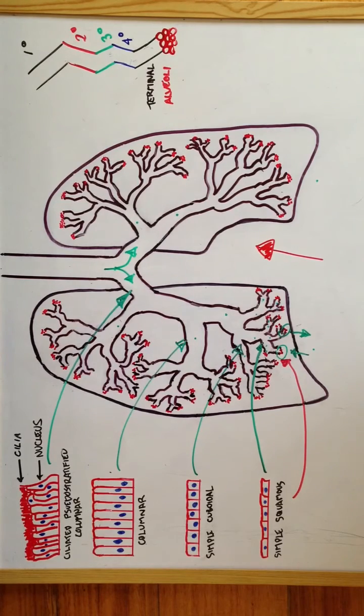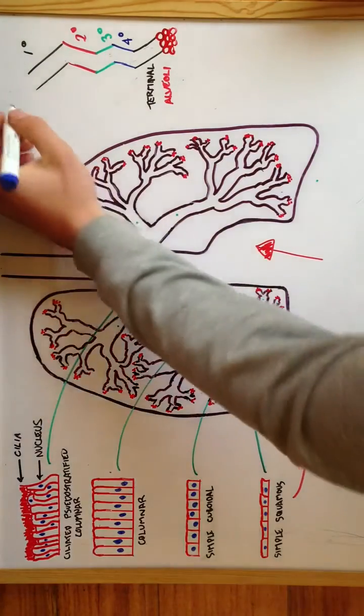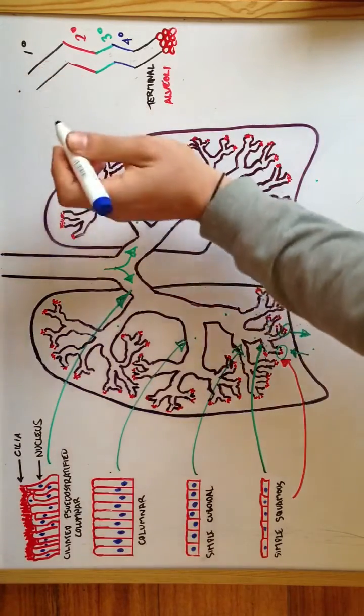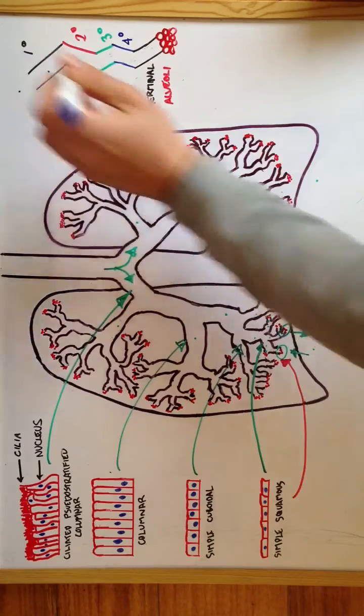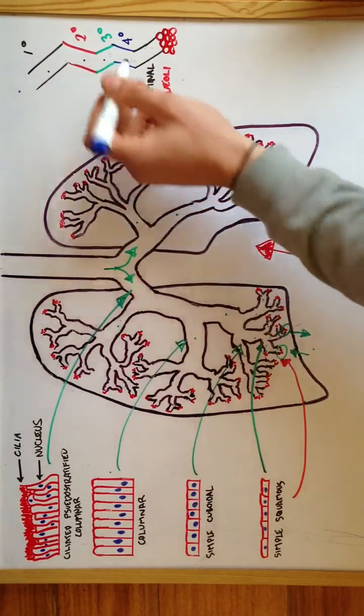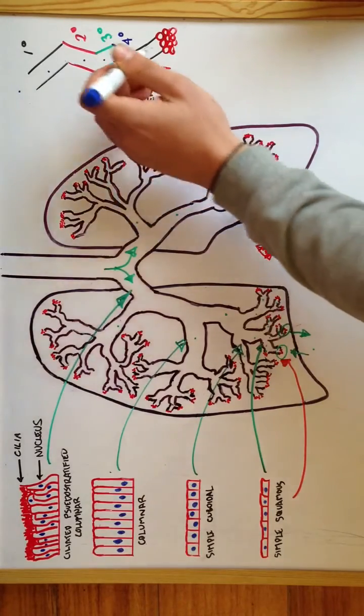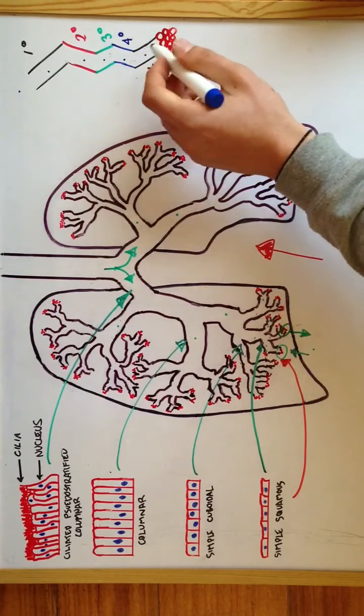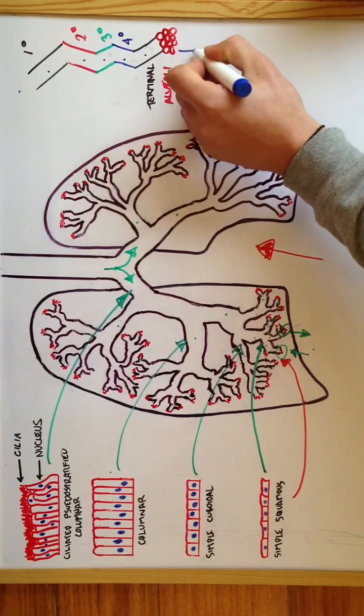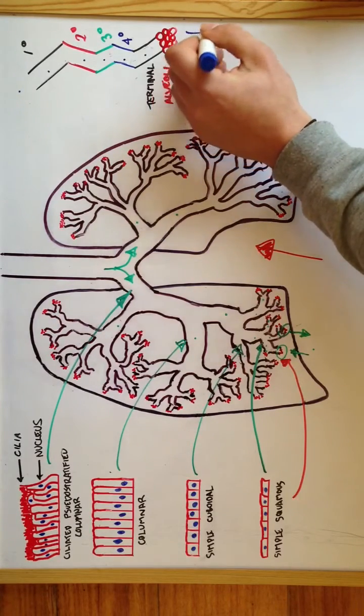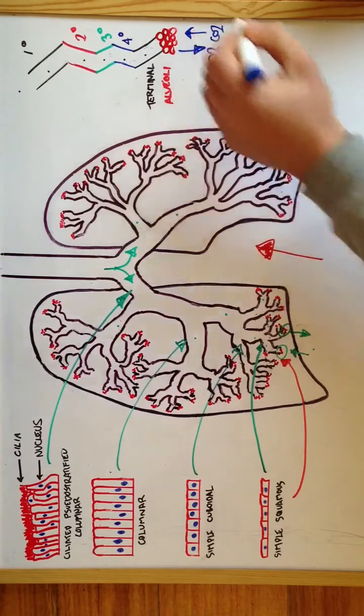To sum up what we've learned today, I want to refer to this diagram here. If oxygen was to enter the trachea, once it goes down, it would go into the right or left primary bronchi, here, into the secondary bronchi, tertiary bronchi, quaternary or the bronchioles, into the terminal bronchioles, where then it will go through the alveolar ducts and alveoli where gas exchange will take place. So either oxygen molecules will come out or carbon dioxide molecules will go back in.